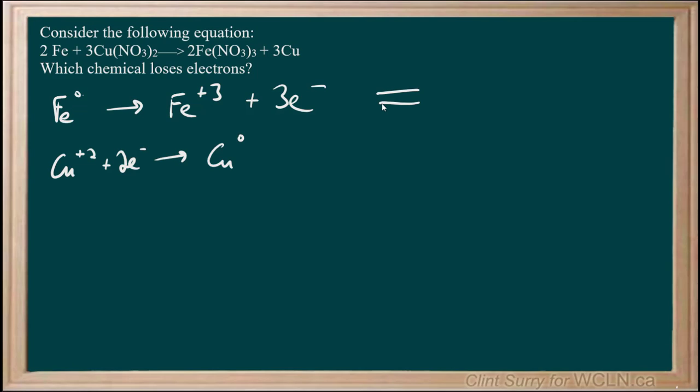Therefore our answer has to be the iron is the chemical that loses electrons.